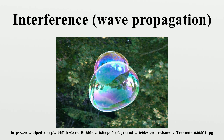This is constructive interference. If a crest of one wave meets a trough of another wave, then the magnitude of the displacements is equal to the difference in the individual magnitudes. This is known as destructive interference. Constructive interference occurs when the phase difference between the waves is a multiple of two pi, whereas destructive interference occurs when the difference is an odd multiple of pi.